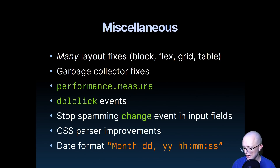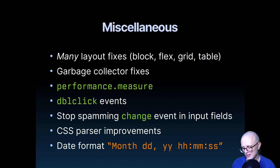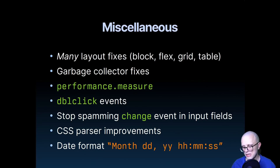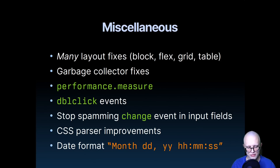Sam also did a bunch of stuff on getComputedStyle, continuing to increase our coverage of properties. We also support a new date format — it turned out Discord uses a format with the full name of the month, and Luke added support for that so a panel in Discord doesn't break when we don't support it. Thank you to everybody else for all the little bits and pieces — there's so many different things. I think we had like 400 commits just in libweb alone this month.